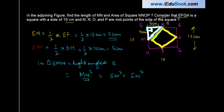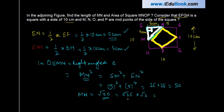MN squared is something we need to find out. EM equals 5 squared plus EN 5 squared, or 25 plus 25 equals 50. So MN equals square root of 50. Square root of 50 can be written as square root of 25 times square root of 2, which is 5 root 2.